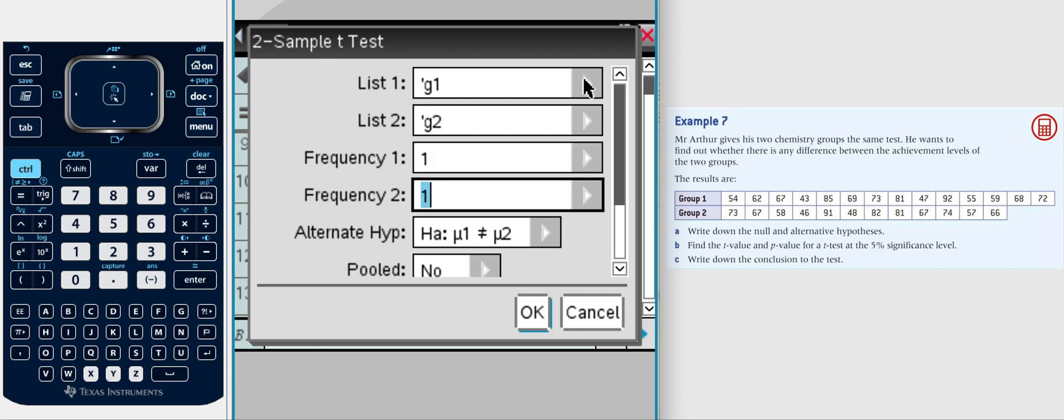Remember that alternative hypothesis? This is where you're going to need it. It's asking you how are we testing, is it a one-tailed test or is it a two-tailed test? This one we decided was a two-tailed test.